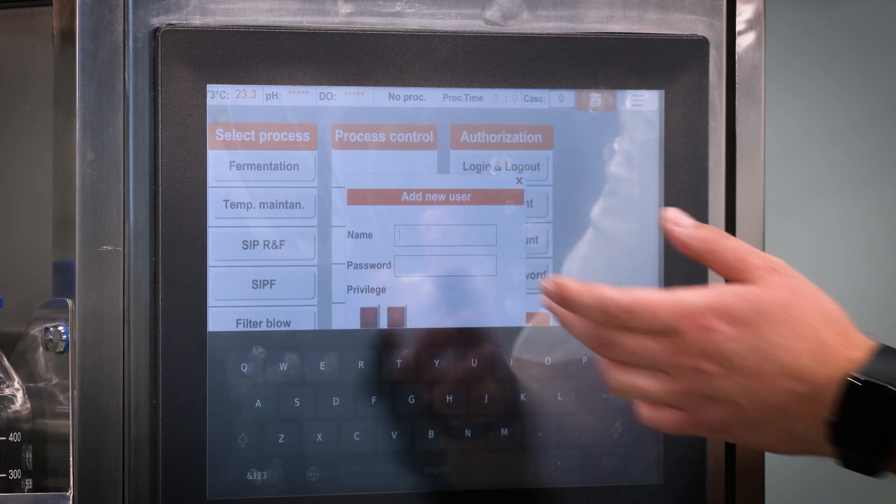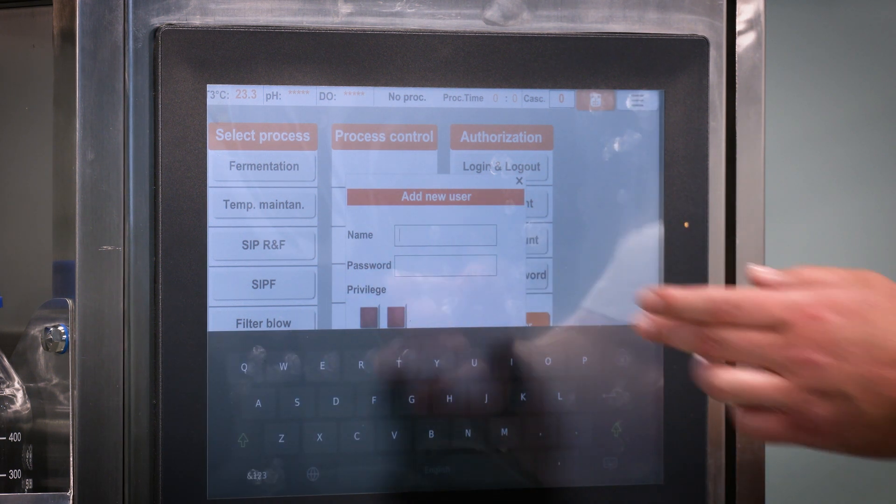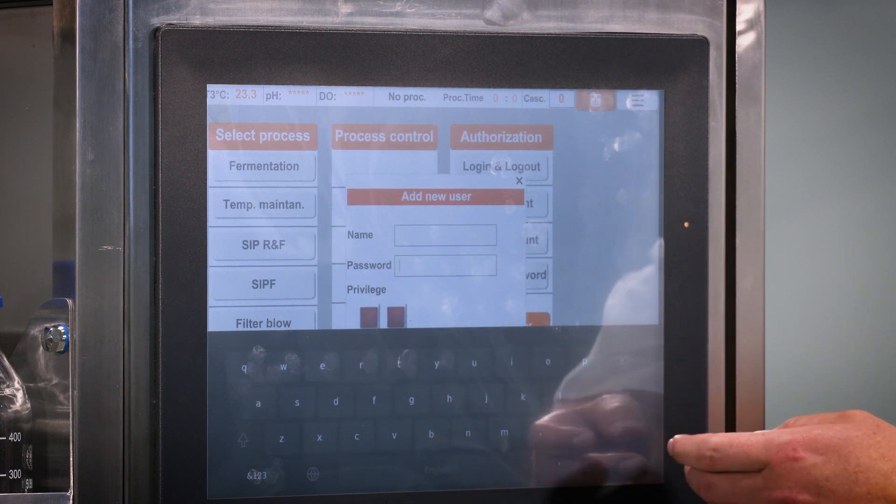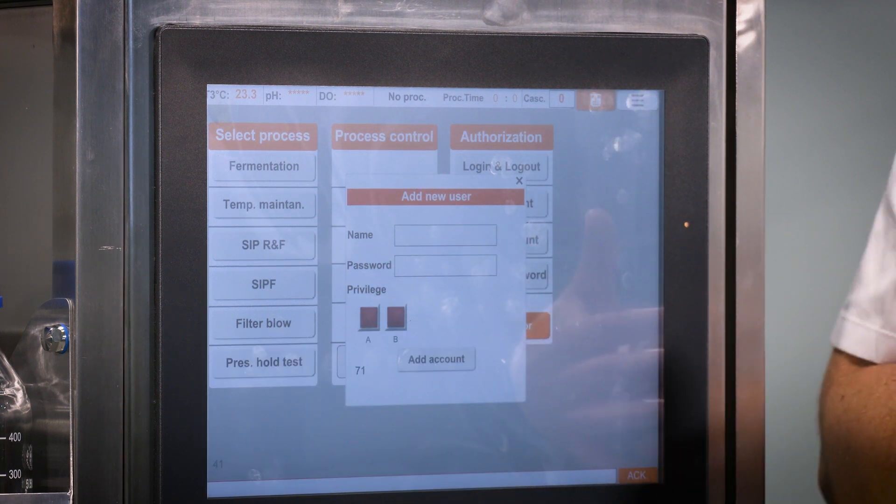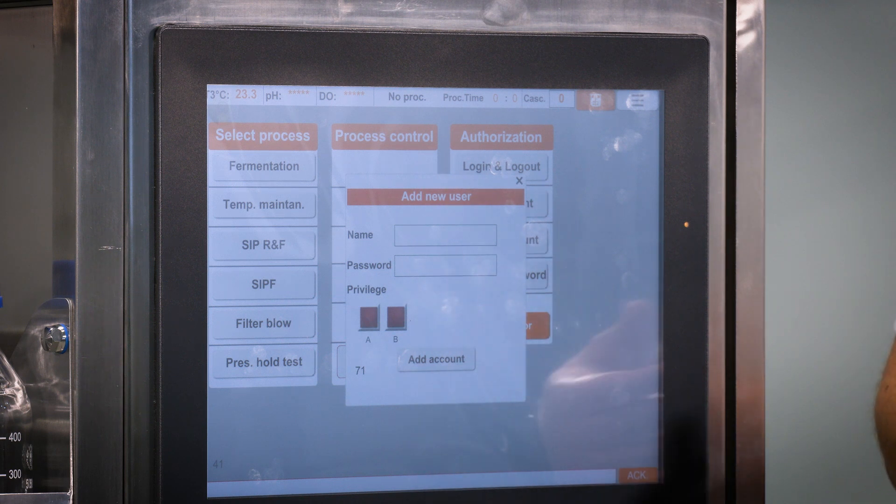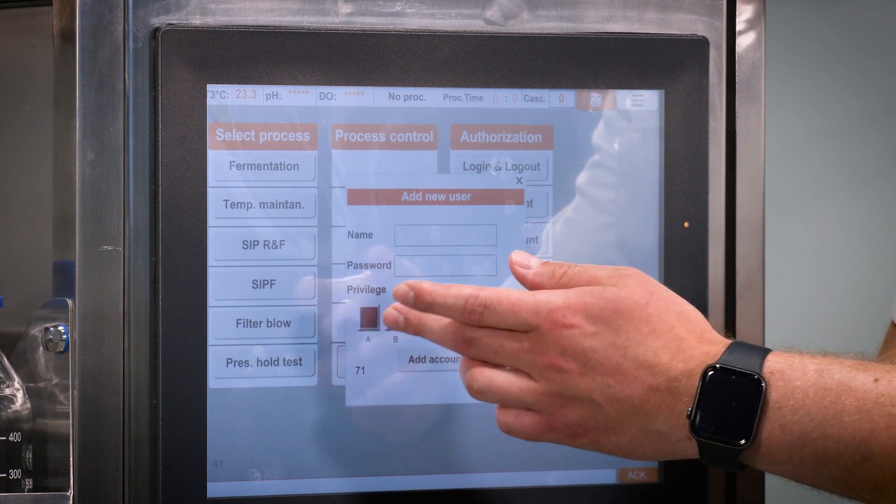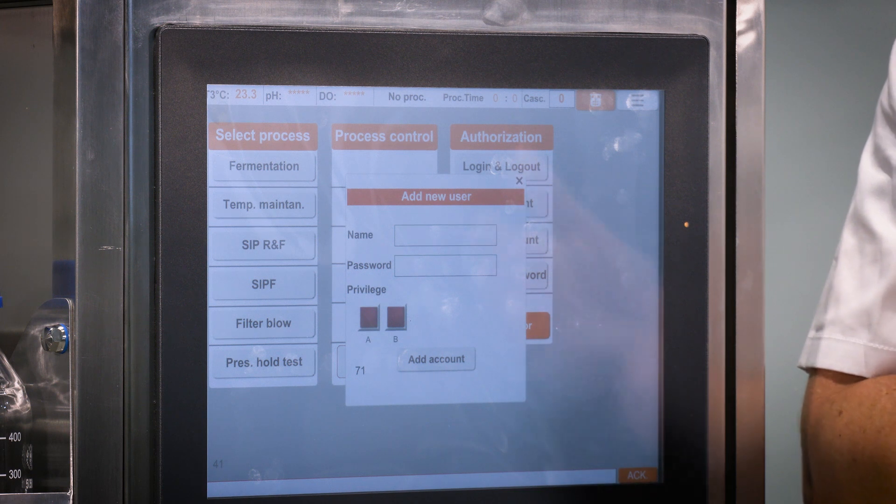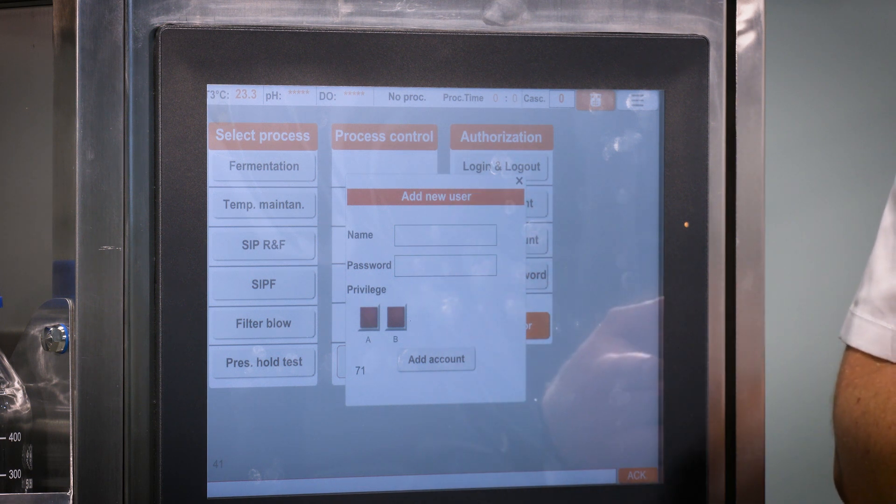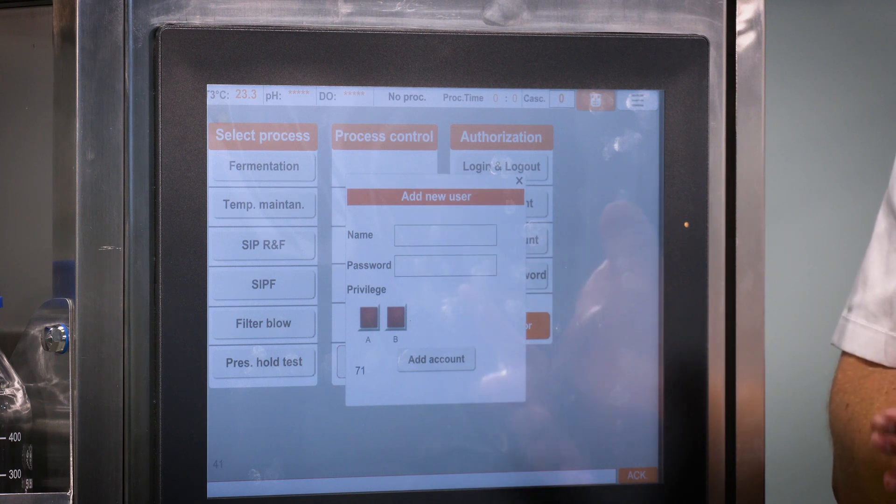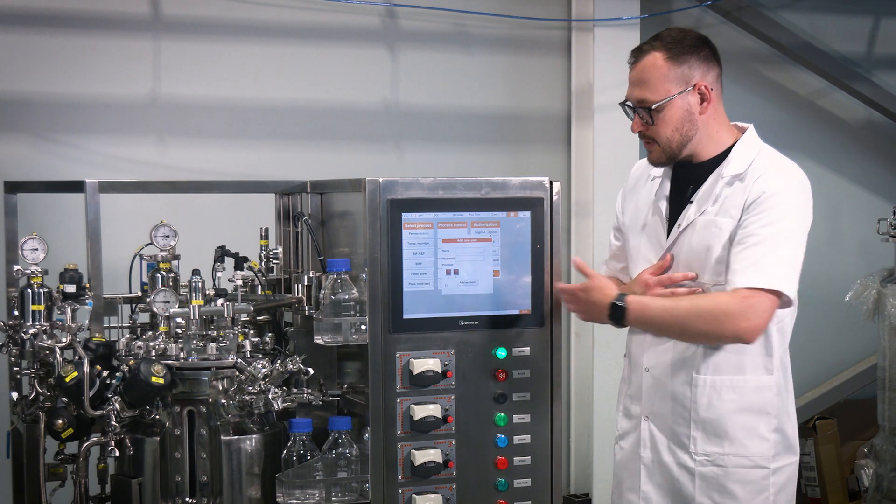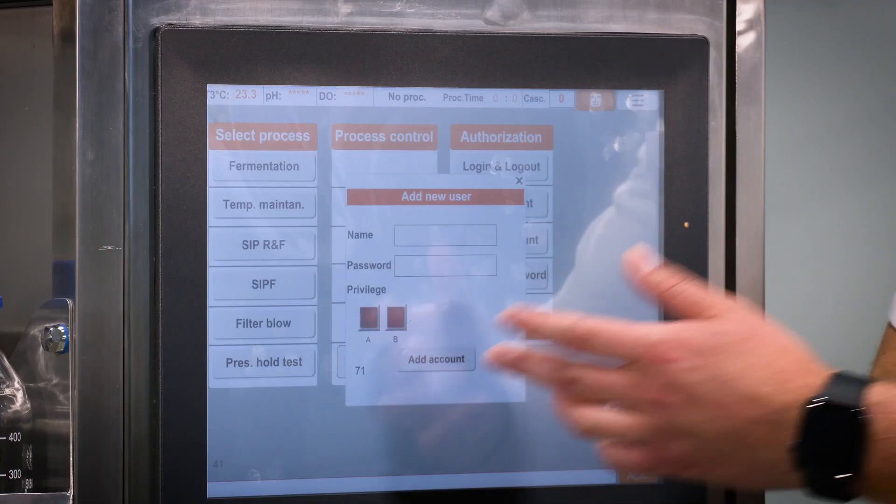Select the new user's name and password by clicking on the respective blank spaces. Also select the appropriate access level A, B or AB to choose whether the new user will have controller level access or operator level access. After this procedure is complete, press the add user button.